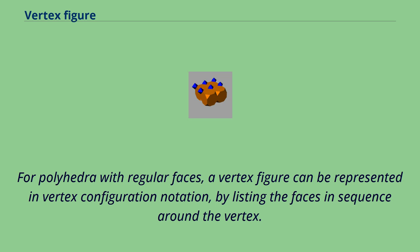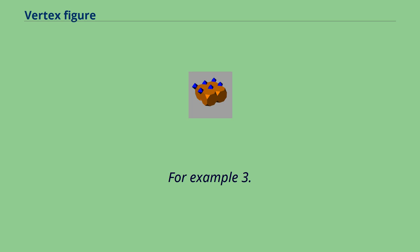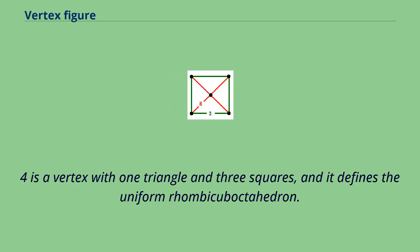For polyhedra with regular faces, a vertex figure can be represented in vertex configuration notation by listing the faces in sequence around the vertex. For example, 3.4.4.4 is a vertex with one triangle and three squares, and it defines the uniform rhombicuboctahedron.